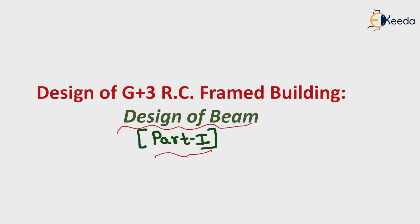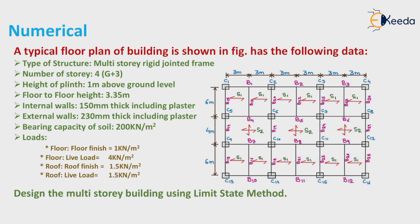For this, I am going to remind the question. A typical floor plan of a building is shown in figure with the following data: type of structure — multi-story rigid jointed frame, number of stories 4 (G plus 3), height of plinth 1 meter above ground level, floor to floor height 3.35 meter, internal wall 150 mm thick including plaster, external walls 230 mm thick including plaster, bearing capacity of soil 200 kN per meter square.